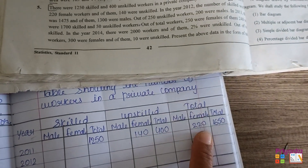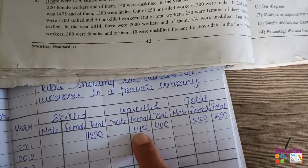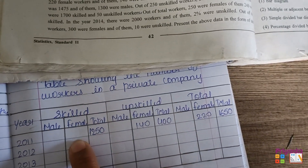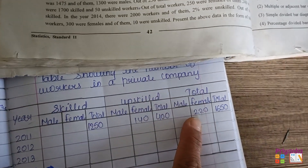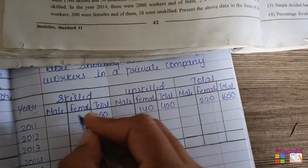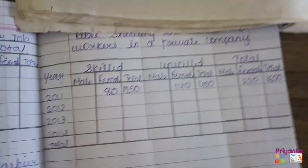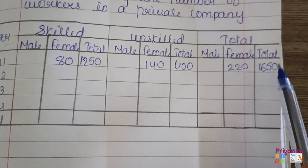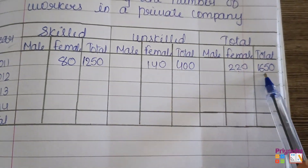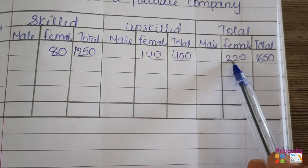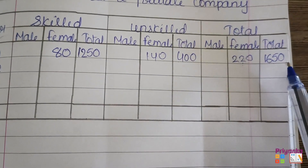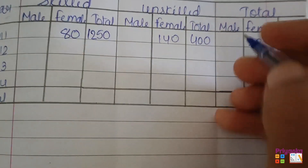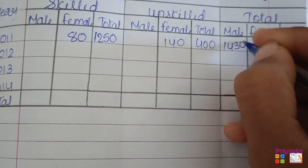The total number of females is 220, out of which 140 are unskilled. So out of the total females, if we subtract 140 unskilled females, we can get the skilled female numbers. 220 minus 140 gives us 80. Out of this information, we can calculate the number of males. I have the total number of workers, and if I subtract 220 females from 1650, I can get the number of males, which is 1430.